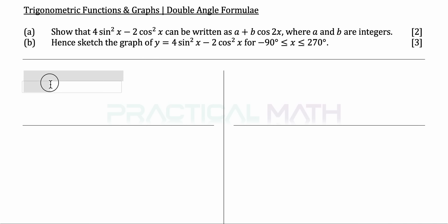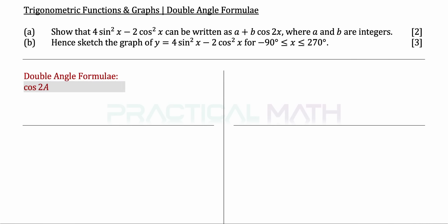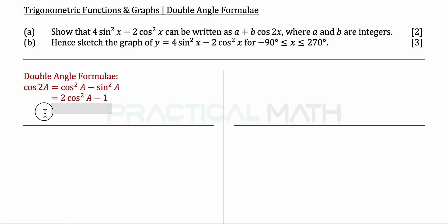For the double angle formula, we have cos2a. Cos2a can be expressed in three forms: the first is cos²a minus sin²a; the second is 2cos²a minus 1; and the third is 1 minus 2sin²a. We will be using one of these later on.